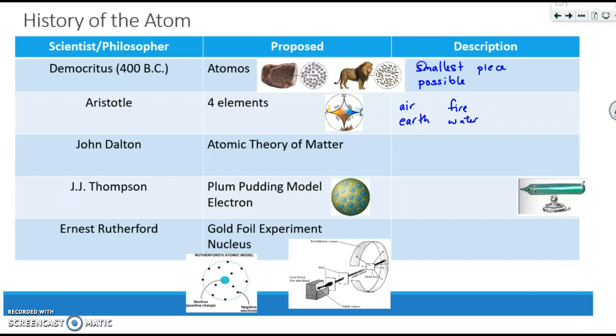Many years go by, a lot of science takes place, a lot of experimentation, and finally, in the late 1700s, a guy by the name of John Dalton, who was a school teacher, came up with the atomic theory of matter. Within his atomic theory of matter, he had four postulates